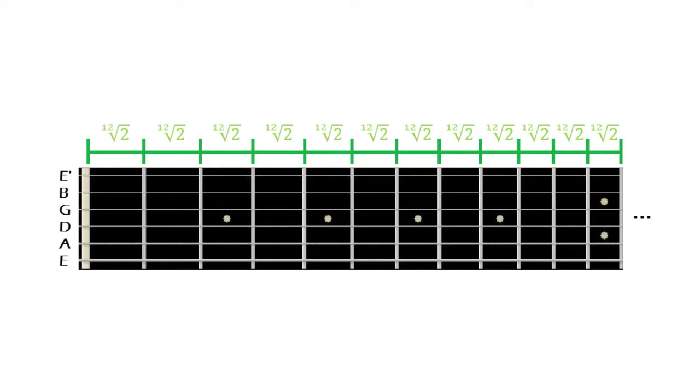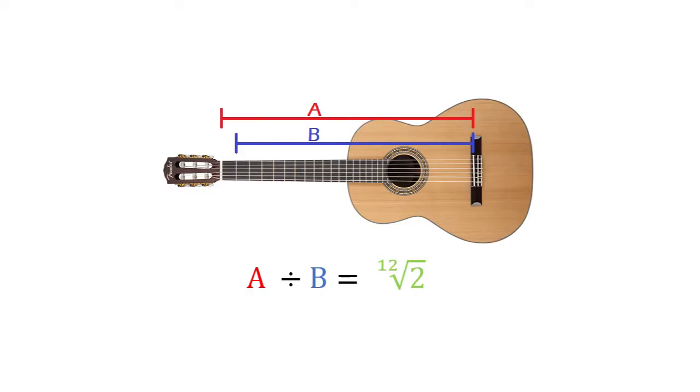Guitars are built for equal temperament, since guitar frets are spaced by ratios of the 12th root of 2. This means that the length of the vibrating portion of the string on a fret, relative to the next fret, will also have that ratio.